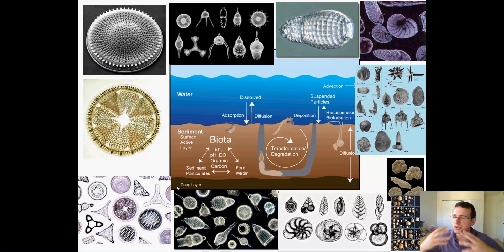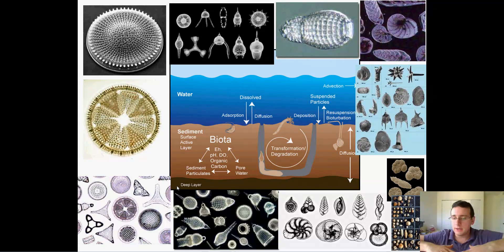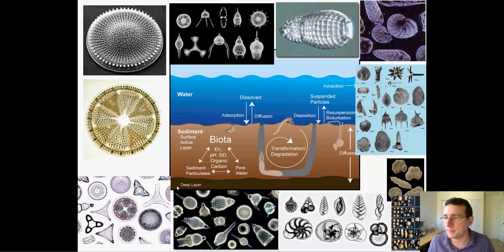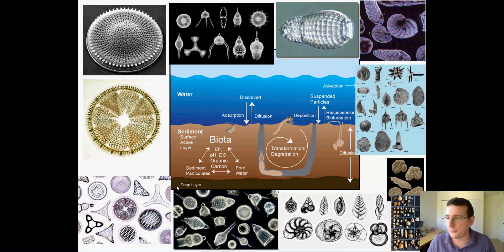If you have nutrient-rich water with more silicon, you're going to have more growth of diatoms and radiolarians. When those organisms die, they fall to the bottom, and if not consumed, they form sedimentation. About 40% of the sediment in the ocean comes from life forms, so life forms have everything to do with sedimentation as well.